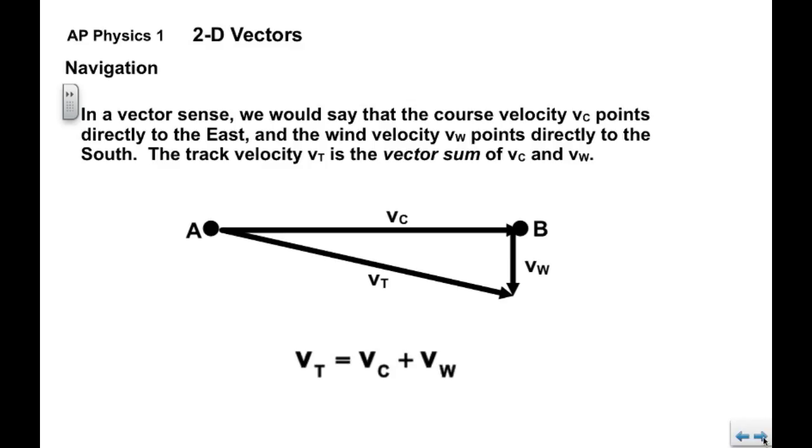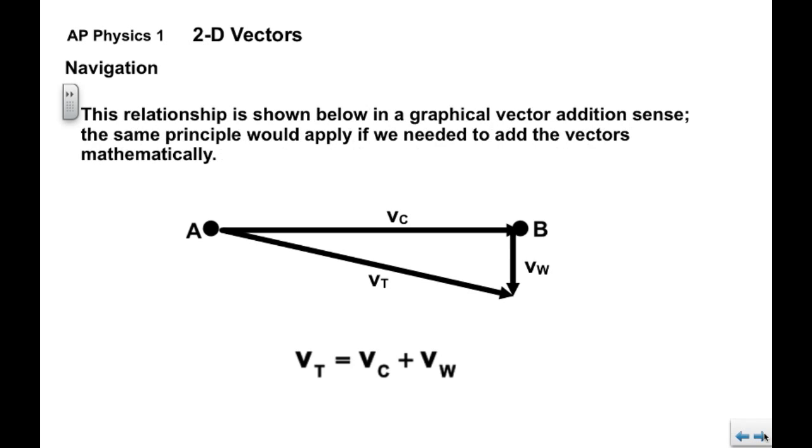Now in a vector sense, this is the critical relationship. In a vector sense, we would say that the course velocity points directly to the east. This is which way the pilot points the plane. The wind points directly to the south, and the track, what the plane actually does, is the vector sum of V sub C and V sub W. So course plus wind equals track. And this is the relationship here.